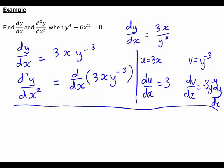dv dx is going to become negative 3y to the negative 4 times dy dx. And the product rule says that we get u times dv dx plus v times du dx when we're differentiating a product.